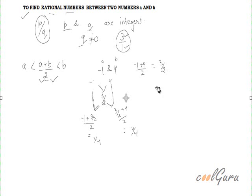So what I get: between minus 1 and 4, the 3 rational numbers are 1 by 4, 3 by 2, and 11 by 4. In fact, there are infinite rational numbers between any two numbers. So I can find as many numbers as possible. But in this question they have asked only 3 numbers. So these are the 3 numbers which are between minus 1 and 4.